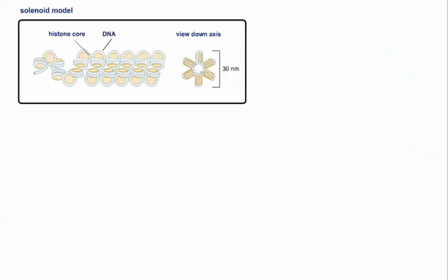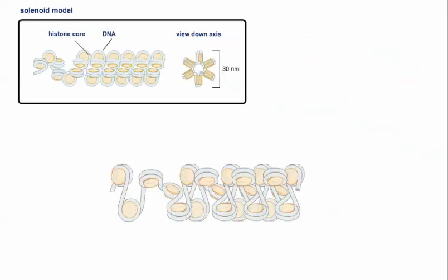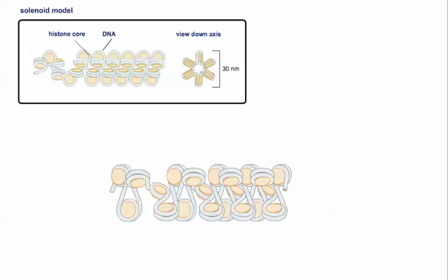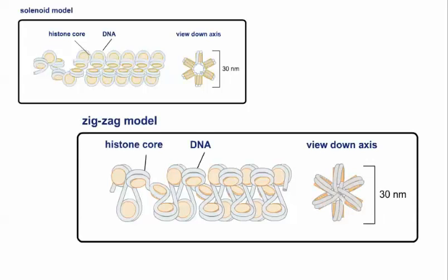A second model for the 30 nanometer fiber is the zigzag model, so named because this type of folding gives the fiber a zigzag appearance. The zigzag form requires longer linker DNA than the solenoid model, and thus may be the preferred form in species with longer linker DNA.